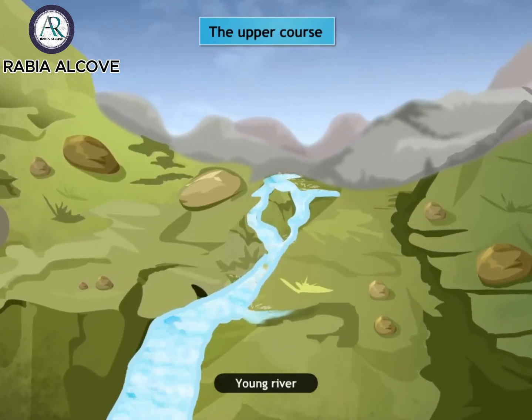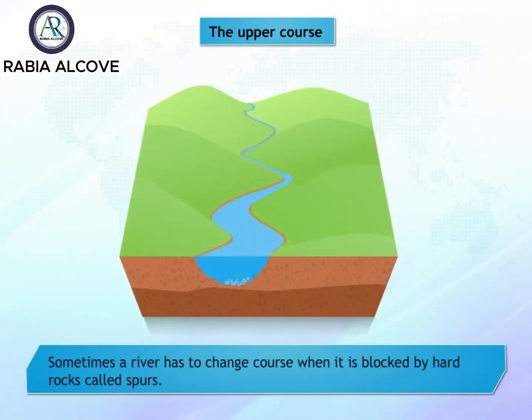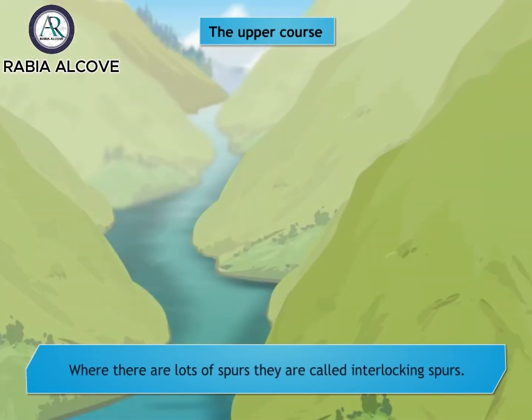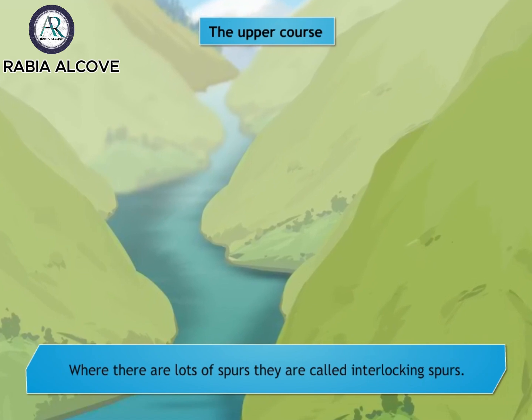As it flows, the water cuts a V-shaped valley in between mountains. These valleys are not always straight, as sometimes the water has to change course when it is blocked by hard rocks called spurs. Where there are lots of spurs, they are called interlocking spurs.